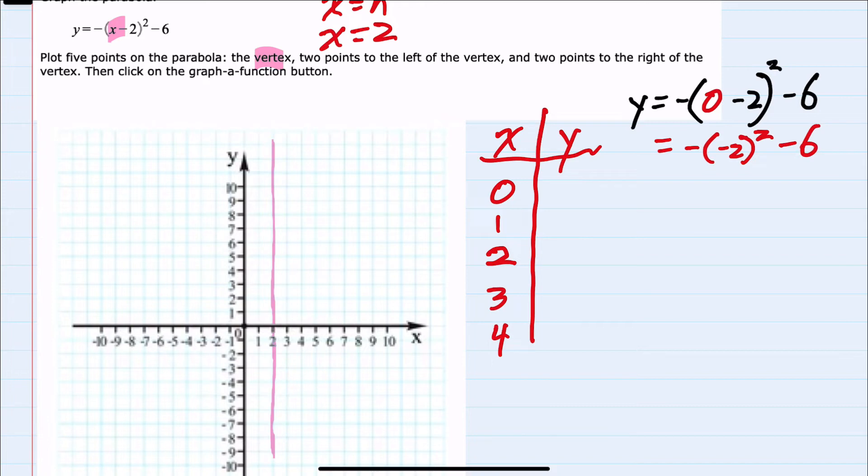And while the minus two squared is positive, this negative is still outside. So negative two squared is four, but the minus is still outside. Bring down the minus six. So this gives us a y value of minus ten. We have our first point: zero, minus ten.